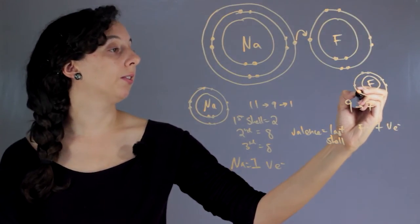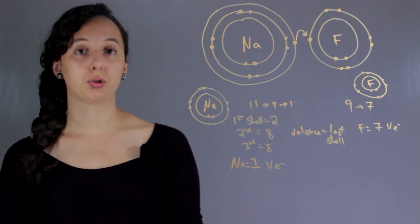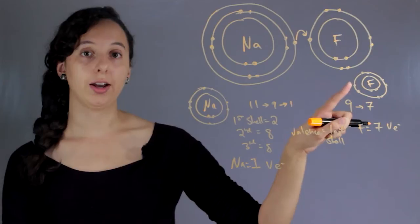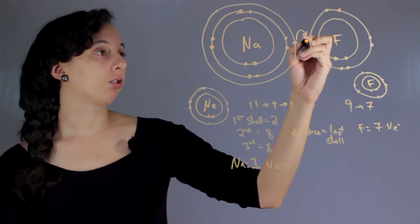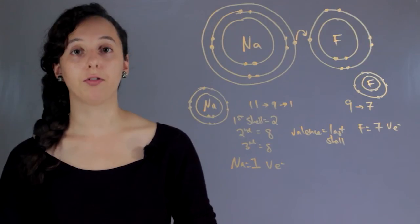So for comparing valence electrons between sodium and fluorine, we'd say that sodium is extremely willing to give up its valence electron, and fluorine is not. You can see that this electron would never come over here because that makes each atom farther away from its goal.